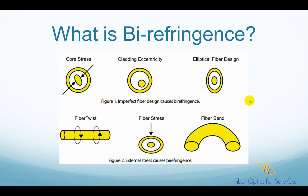If the fiber causes two polarization modes to travel at different speeds, we say that this fiber has birefringence. Birefringence is a defect of material such as optical fiber, where the effective index of refraction changes with the polarization state of the input light. There are many things in the fiber that cause birefringence, such as fiber core stress, cladding eccentricity, fiber twist, fiber stress, fiber bend, etc. So in the real world, there is always birefringence existing in the fiber that causes PMD.